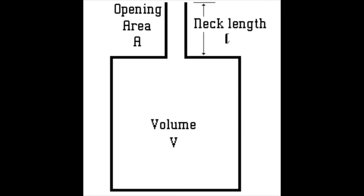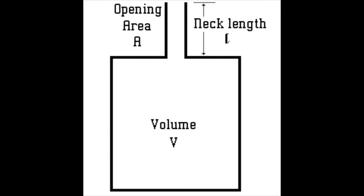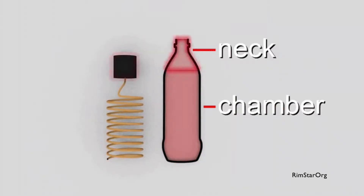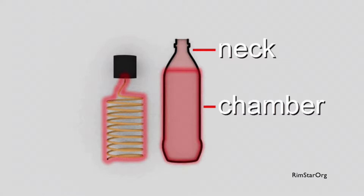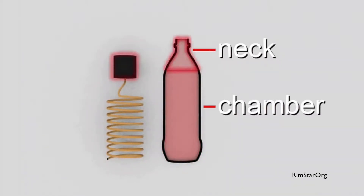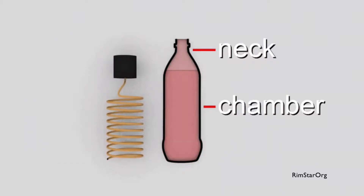A Helmholtz resonator is a container of gas with an open hole. A volume of air in the neck vibrates because of the springiness of the air inside the chamber. The chamber acts in a similar way to a spring and the neck acts like a mass attached to the spring. The frequency of this resonance depends on the volume of air in the chamber, the opening area, and the neck length.